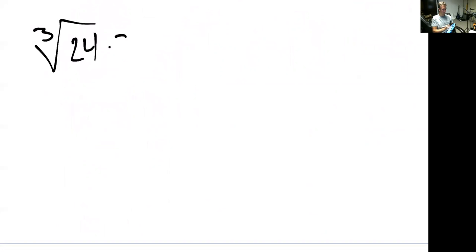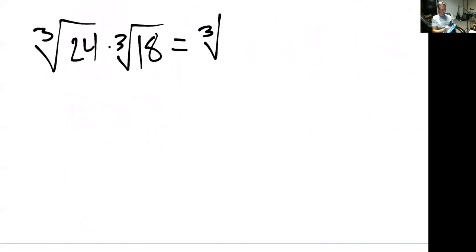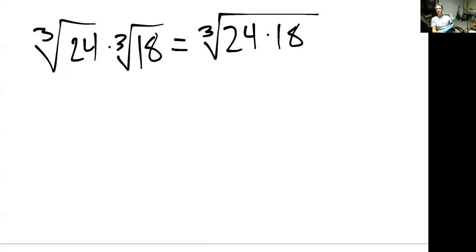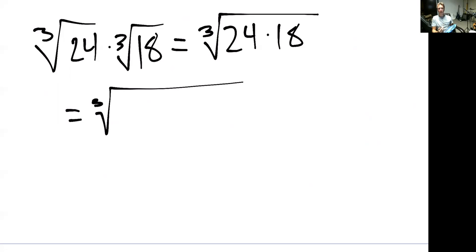Next, we're really going to have to use our concepts from before. We've got the third root of 24 times the third root of 18. We'll bring together both radicals just like before, giving us the third root of 24 times 18. We're not going to multiply those together — we'll break them into their prime factors and look for the same number multiplied together three times, then bring it out front.